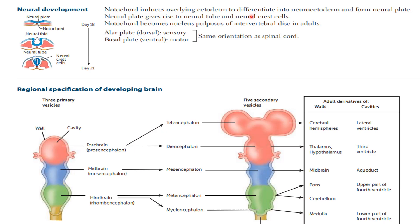First, let me draw the layers. We have three layers, as we all know. The first one is going to be the ectoderm, the middle one is going to be the mesoderm, and the last one is going to be the endoderm. As we can see here in the diagram, we have these three layers.